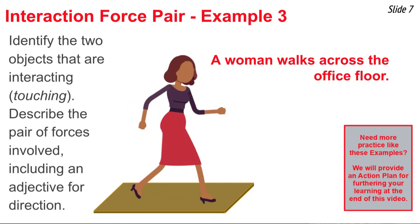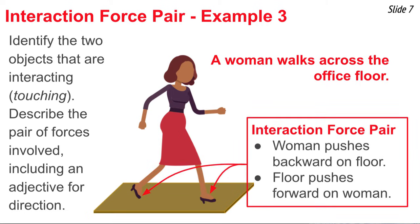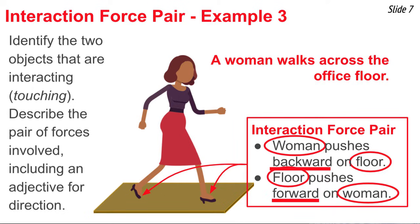In our third example, we're going to talk about walking. When you walk, you stretch your right foot ahead of your body and plant it on the floor, then you take your left foot and push off of the floor — you push the floor backwards. So when we describe the interaction force pair for a woman walking across the office floor, we identify the two objects as the woman and the floor, and say the woman pushes backwards on the floor and the floor pushes forward on the woman. In describing the other force in the pair, I've simply switched the nouns around in the sentence and backwards has become forward.